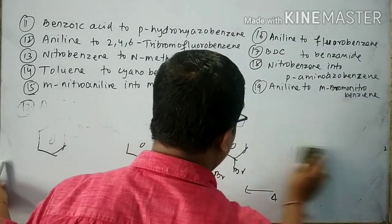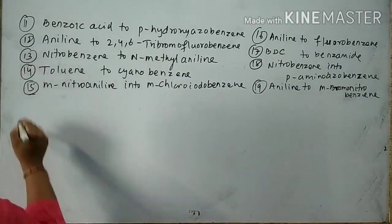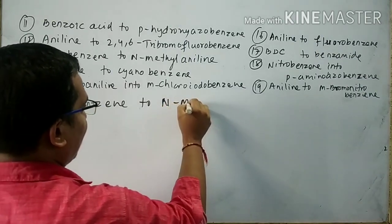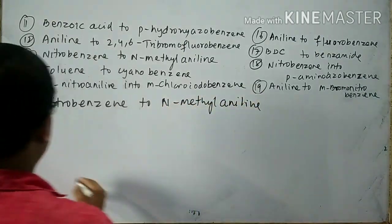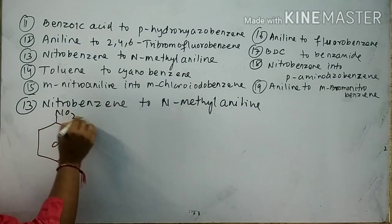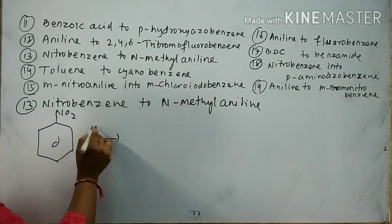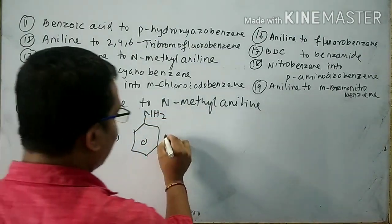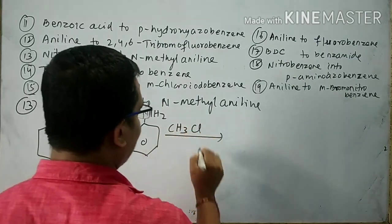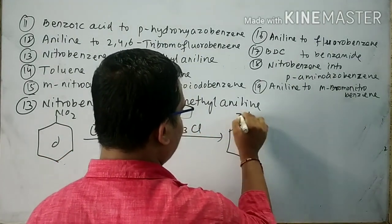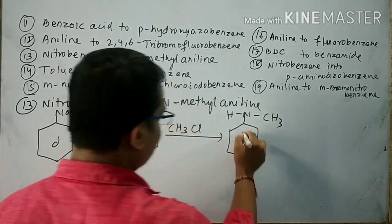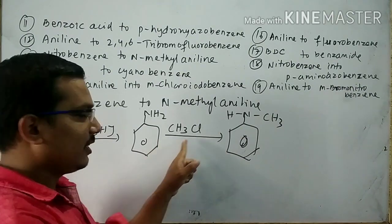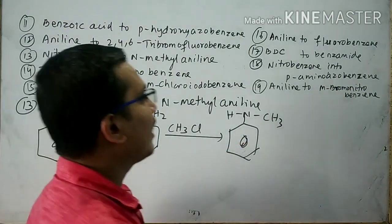Question number 13: Convert nitrobenzene to N-methylaniline. First, nitrobenzene is subjected to reduction; NO2 is converted into NH2, giving aniline. Aniline is then subjected to reaction with methyl chloride (CH3Cl), and N-methylaniline is formed. To repeat: nitrobenzene undergoes reduction to give aniline. Aniline reacts with methyl chloride to form N-methylaniline.